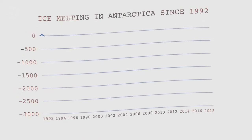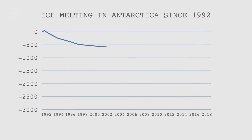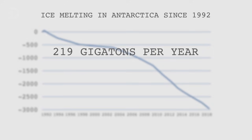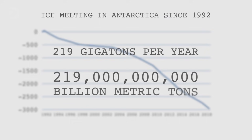The amount of ice that has melted since 1992 until now has increased exponentially, and it is estimated that the rate of ice loss is 219 gigatons per year. That's 219 billion, billion metric tons. That's a huge number to wrap your mind around.